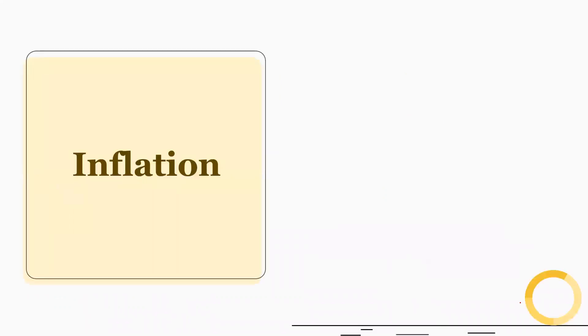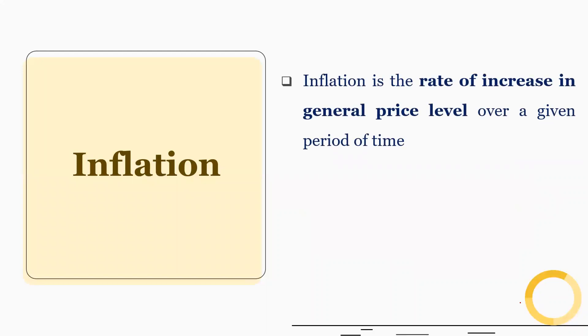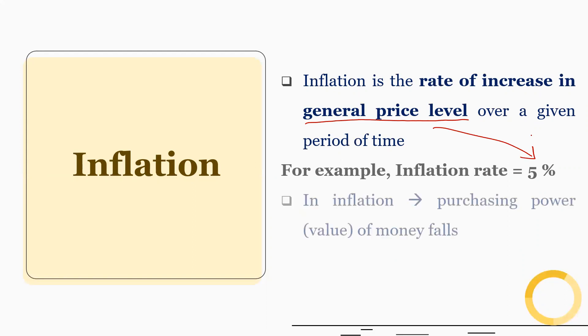Let's begin with the idea of inflation. Inflation is the rate of increase in general price level over a given period of time. For example, inflation rate is 5%, which means that the general price level increases at 5% over a given period of time. So, during inflation, the purchasing power of money or value of money falls.